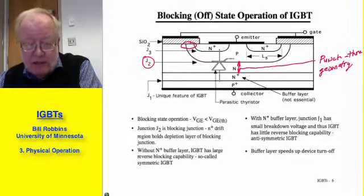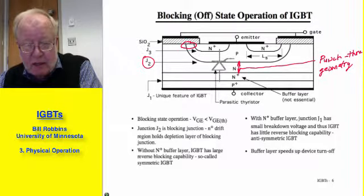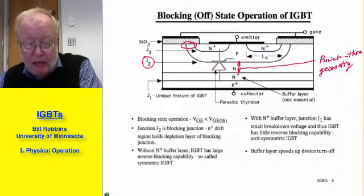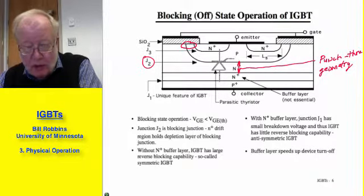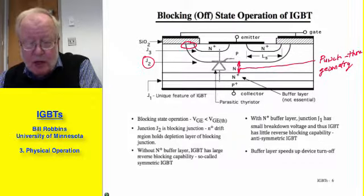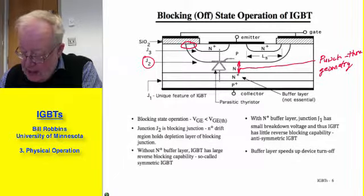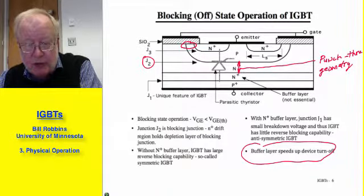When you have the N-plus buffer layer, the device is almost always designed as a punch-through structure for breakdown voltage considerations, because the length of the drift region can be reduced compared to a non-punch-through breakdown rating. That means carrier lifetimes can be made significantly smaller compared to an equivalent non-punch-through device, and thus the punch-through structure will have a faster turn-on and in particular a faster turn-off time. The buffer layer speeds up, especially, the turn-off time.